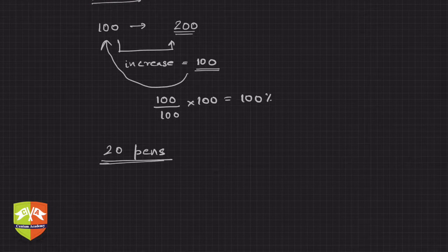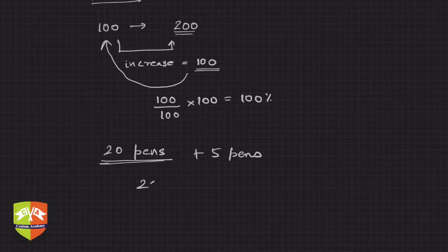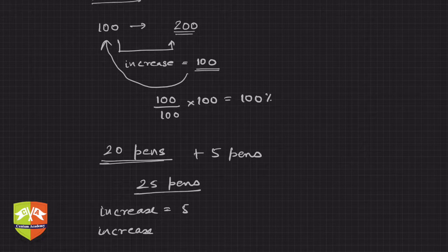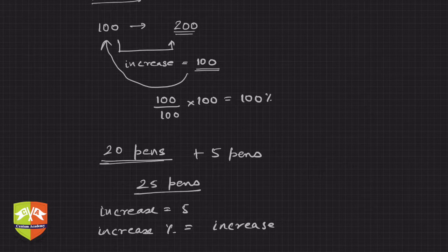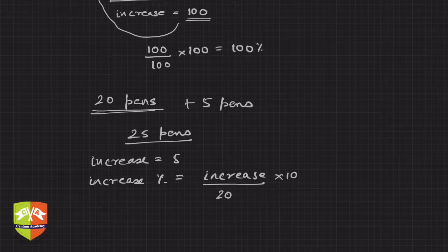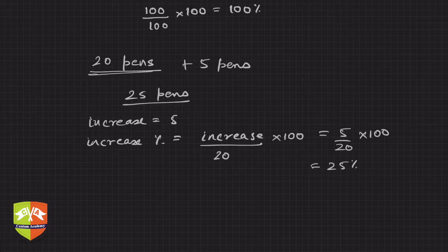Let's take another example. You have 20 pens and someone gives you 5 more, so now you have 25 pens. The increase is 5. Percentage increase equals increase divided by original value, multiplied by 100. So it is 5 upon 20 into 100, which gives 25% increase.